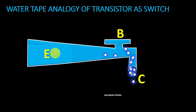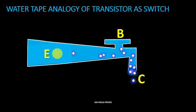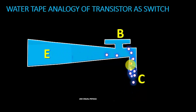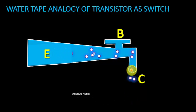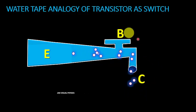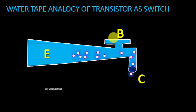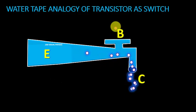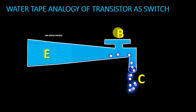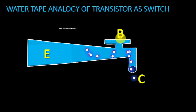Current passing through a transistor enters at the emitter terminal and leaves at the collector terminal, while the base terminal of the transistor controls the current passing through it. We can turn on or turn off a transistor with the help of the base terminal.